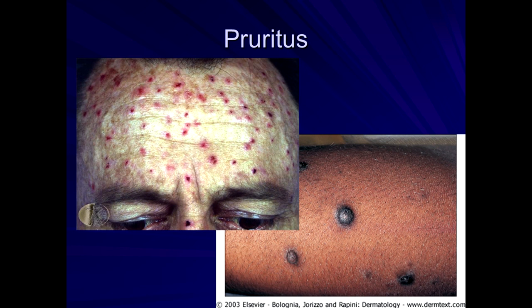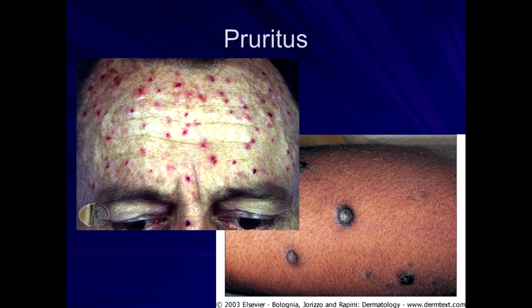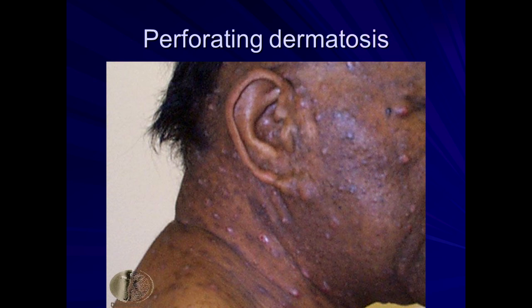Here you have a dialysis patient with renal disease who has excoriations from severe itch — they're scratching, and they also develop nodules. There's something called perforating disease — acquired perforating dermatosis — where they develop papules and nodules. That's what this is depicting. These patients often blame themselves, thinking it's their fault from scratching. This is a real organic cause related to kidney disease, perhaps related to the buildup of certain toxins.